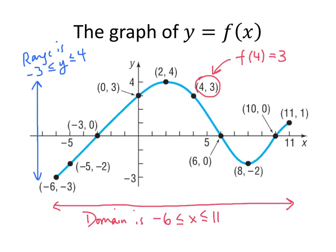Something else that we're often interested in are what we call intercepts. And intercepts are simply points where the graph crosses either the x-axis or the y-axis. X-intercepts are places where the graph crosses the x-axis. And in this function, we have three x-intercepts.